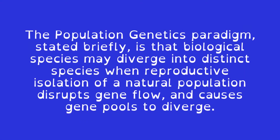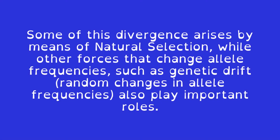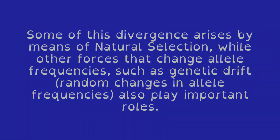The population genetics paradigm, stated briefly, is that biological species may diverge into distinct species when reproductive isolation of a natural population disrupts gene flow and causes gene pools to diverge. Some of this divergence arises by means of natural selection, while other forces that change allele frequencies, such as genetic drift — random changes in allele frequencies — also play important roles.